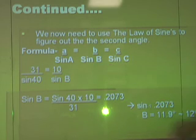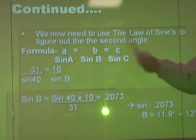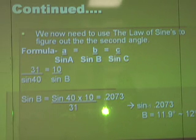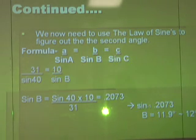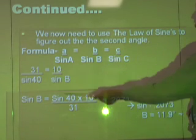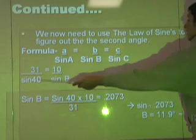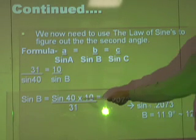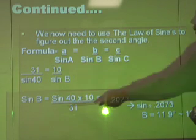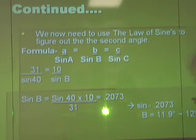The formula of the law of sines is A over sine of A equals B over sine of B equals C over sine of C. So then we plug in the numbers, so it's 31 over sine of 40 equals 10 over sine of B. So then what you need to do is do the reciprocal of these numbers, so you put sine of 40 on top and then you put times 10 over 31. You flipped it.